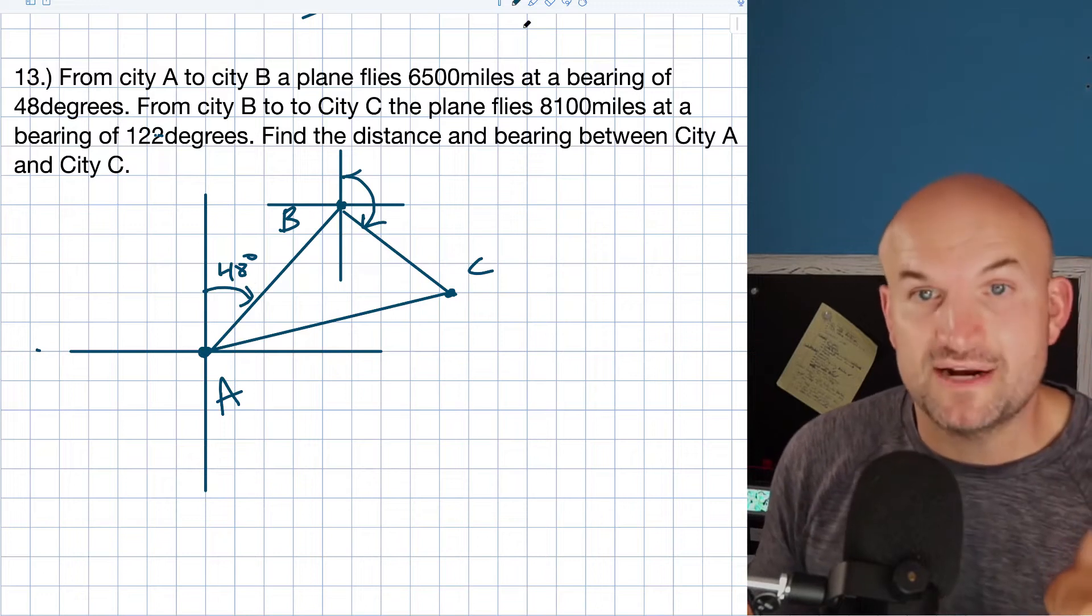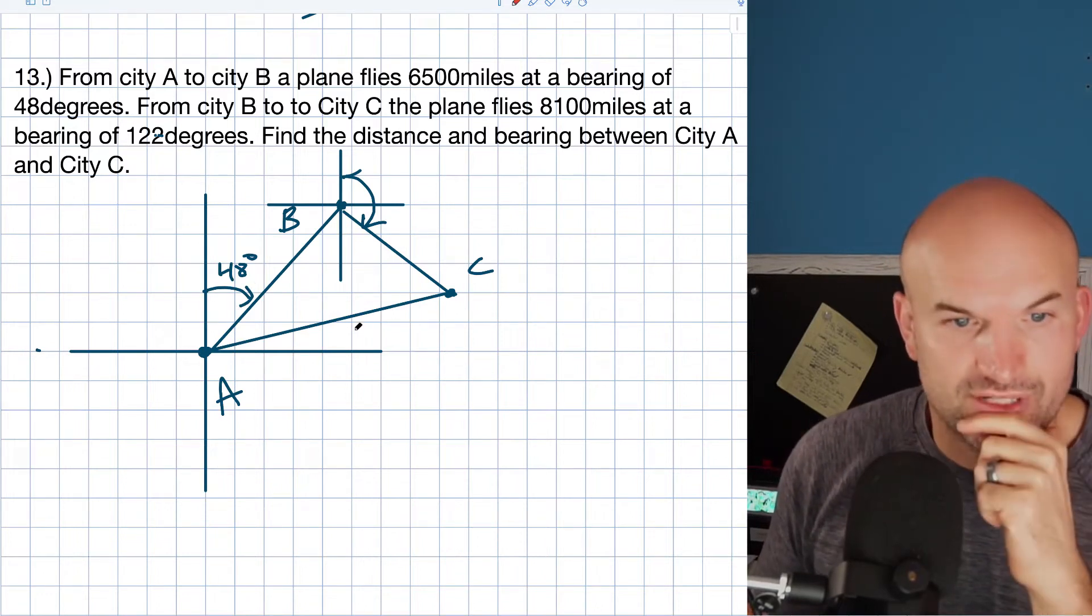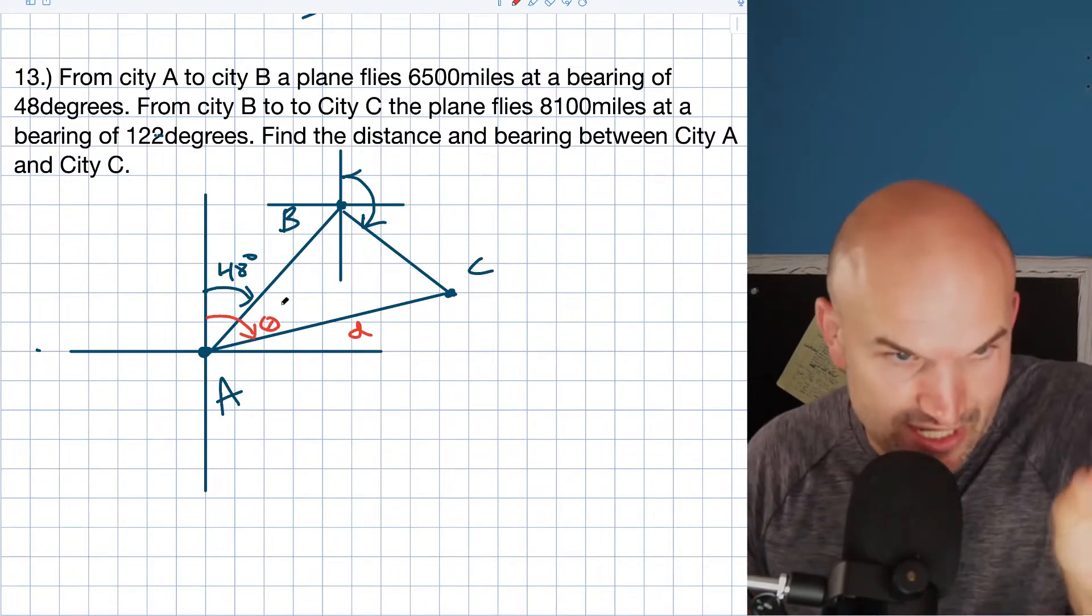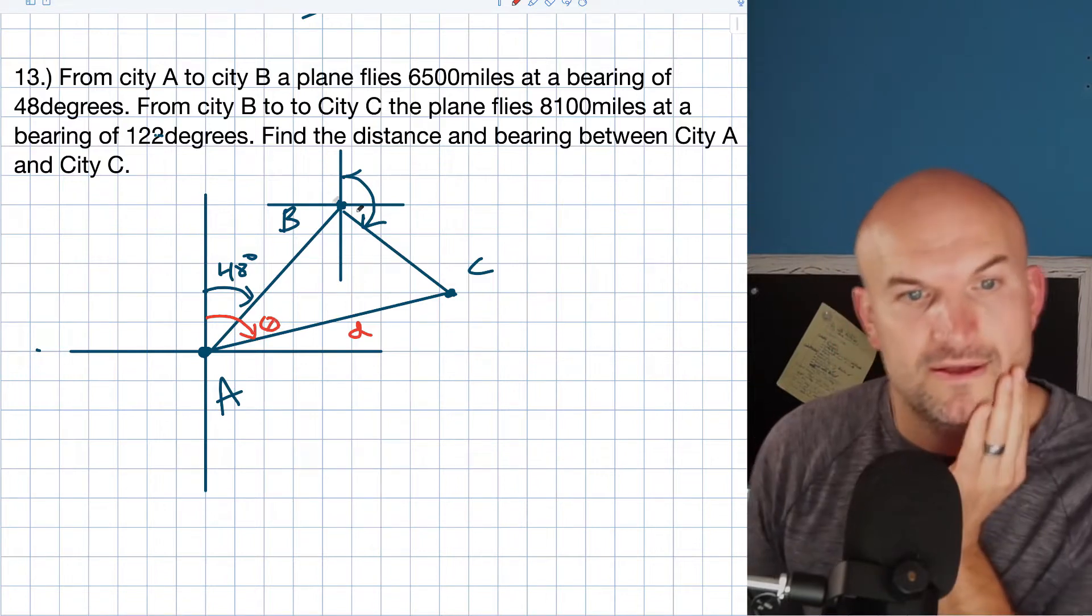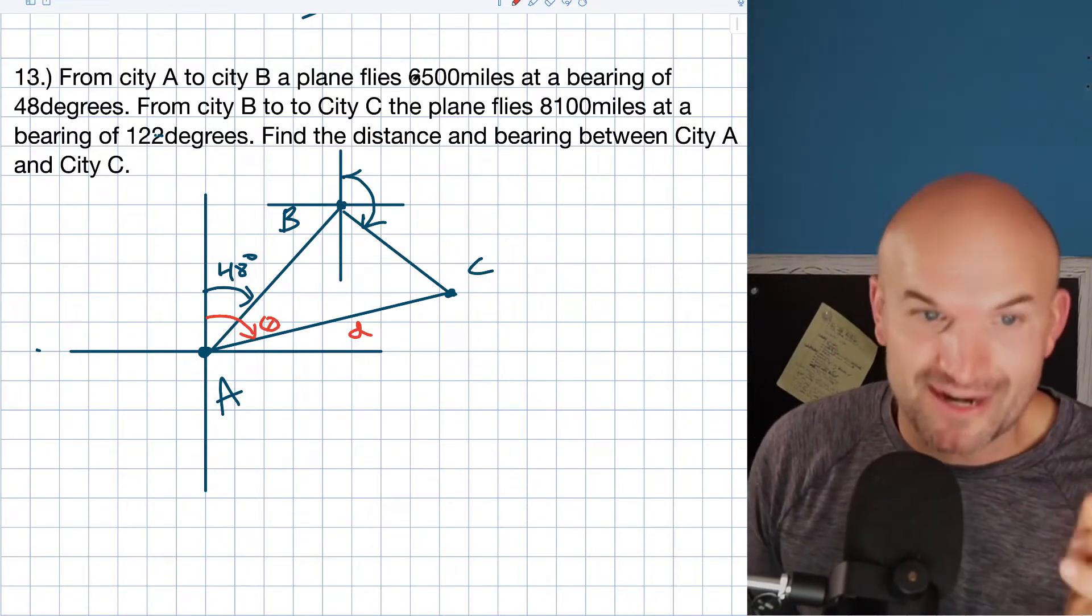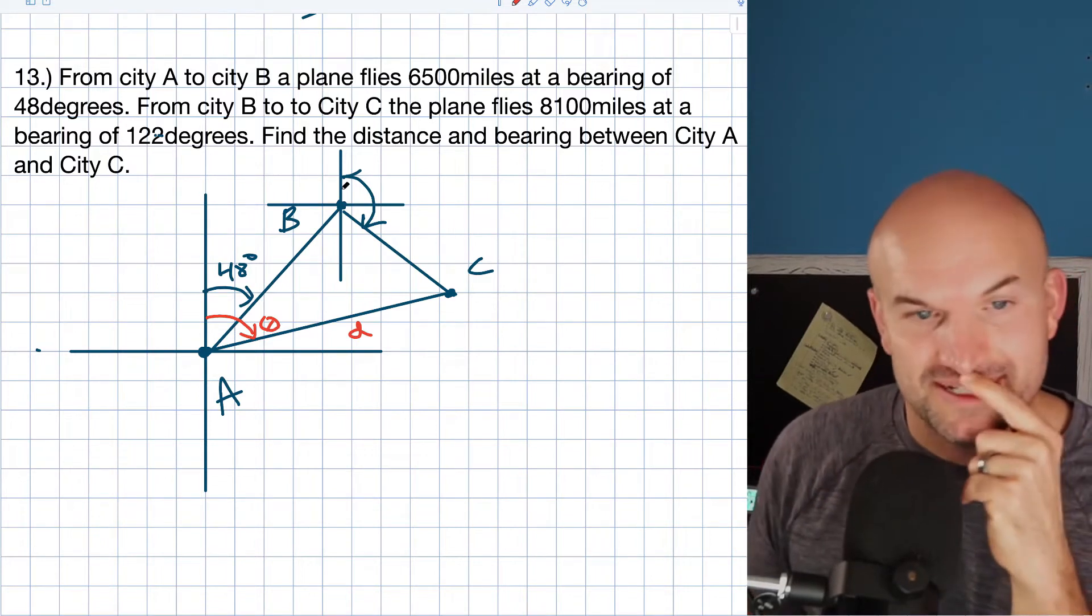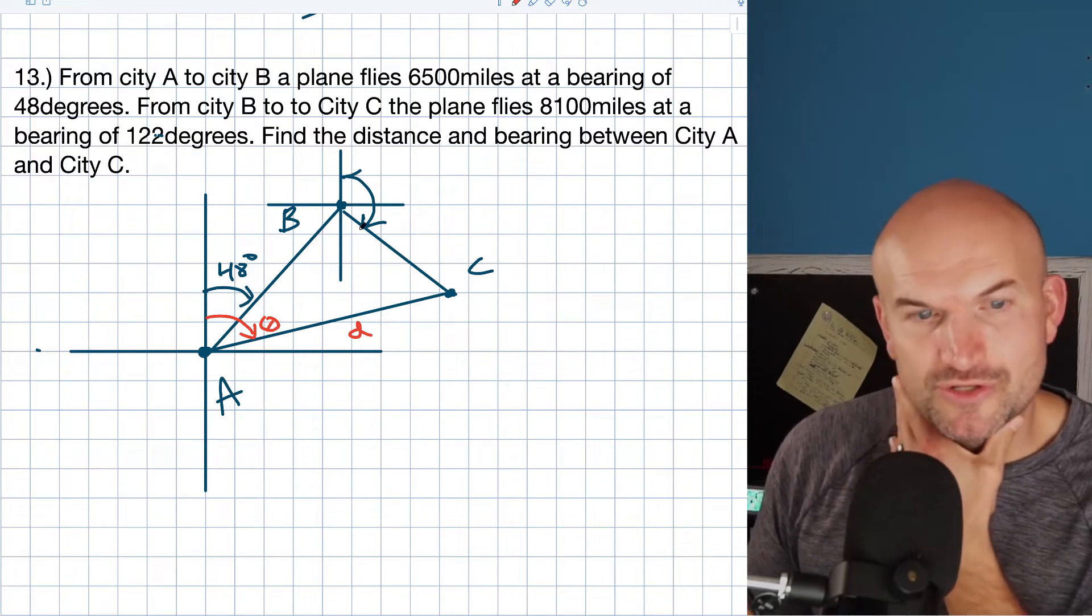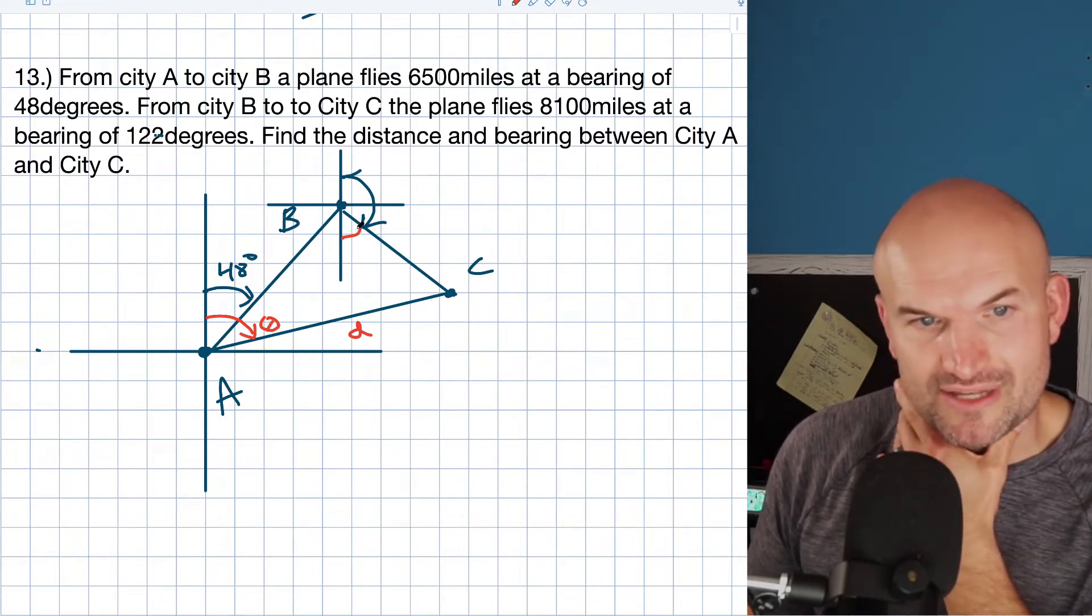Okay, so to find this bearing, what I'm looking for is this distance and this bearing. Now the cool thing is I already have 48 degrees, so I just need to figure out what that angle is. Now this is kind of trouble if we don't have a right angle. So we better have a right angle here because otherwise we're going to be in kind of trouble. So if this is 122 degrees, then what does this angle have to be? Well, 122 plus what equals 180? That's going to be 58, right?